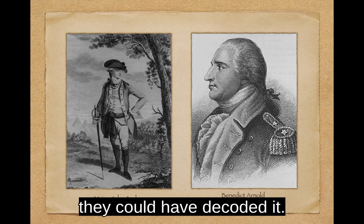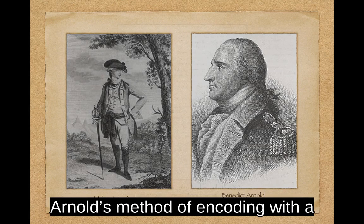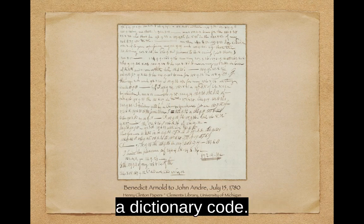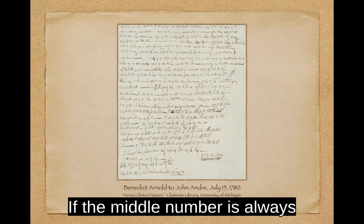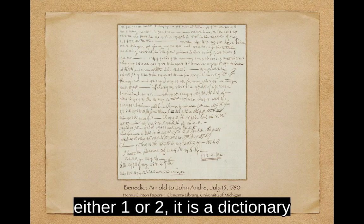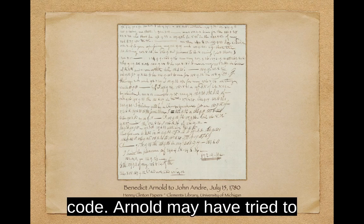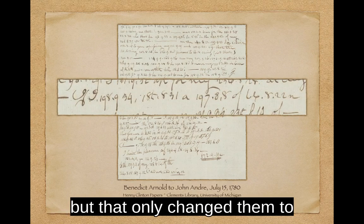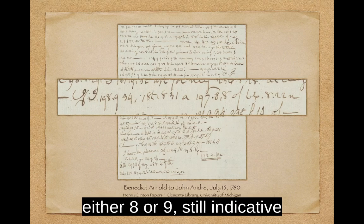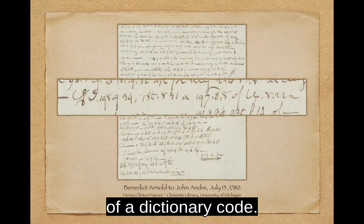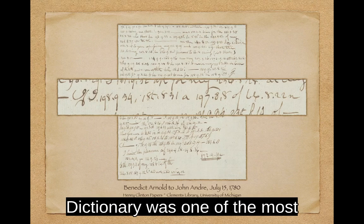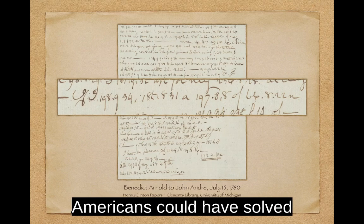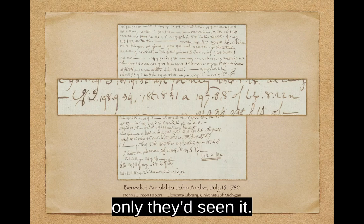If they had seen it, it's possible they could have decoded it. Arnold's method of encoding with a three-number group — page, column count — would have indicated a dictionary code. If the middle number is always either one or two, it is a dictionary code. Arnold may have tried to disguise this because he added seven to the column numbers, but that only changed them to either eight or nine, still indicative of a dictionary code. And since Nathan Bailey's dictionary was one of the most popular dictionaries of the time, it seems plausible that the Americans could have solved Arnold's message, if only they'd seen it.